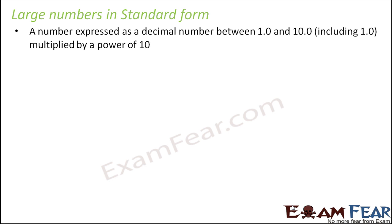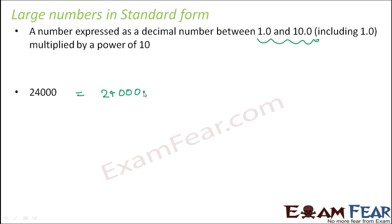Let's look at some examples — this is just a recap. For example, 24,000. This is not in standard form, because whenever you want to write it in standard form you have to write it as a decimal number between 1 and 10. This number is far greater than 10. Right now it actually means 24,000.00 — the decimal point is at the end. So we want to shift the decimal point to a place such that we get a decimal number between 1 and 10.